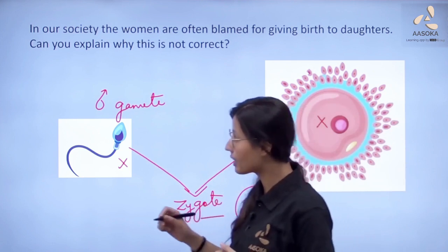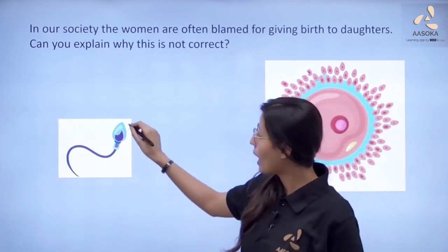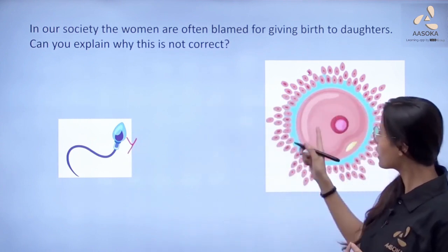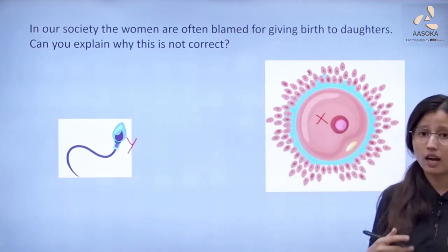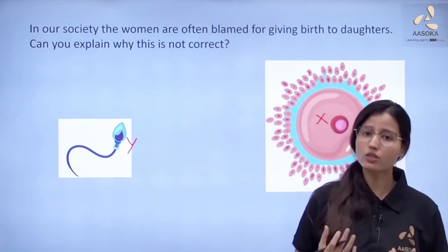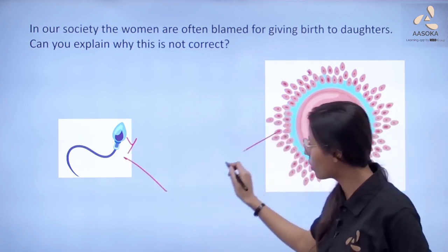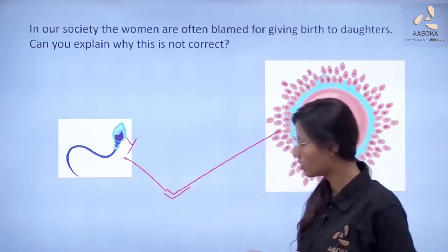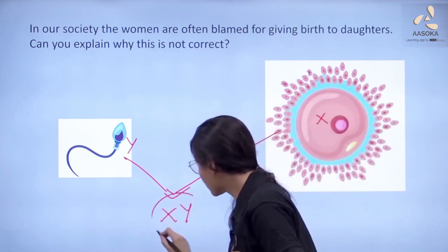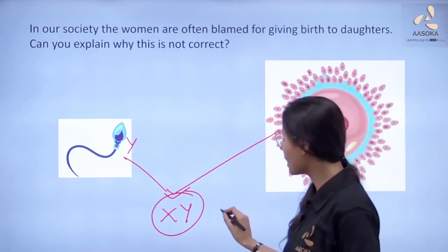But when the sperm which has the Y sex chromosome fertilizes with the egg — and we know that the egg only has the X sex chromosome — the zygote produced will contain the XY sex chromosome and the child will be a male.